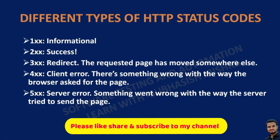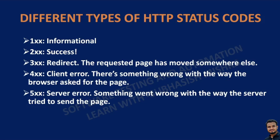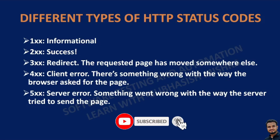Then the 200 series — you will be more familiar with this; it is more of success. Then we have the 300 series — it is more of redirect, meaning the requested page has moved somewhere else. Then we have the 400 series, which is also very frequently used — this is more of a client error, meaning something is wrong with the way the browser asked for the page. Then we have the 500 series, also very frequently used — this is more of a server error, meaning something went wrong with the way the server tried to send the page.